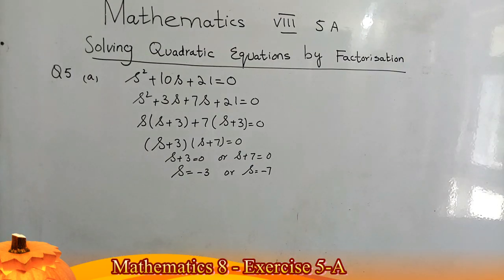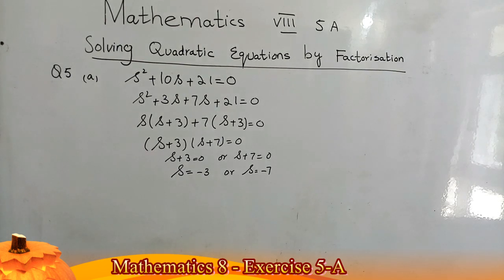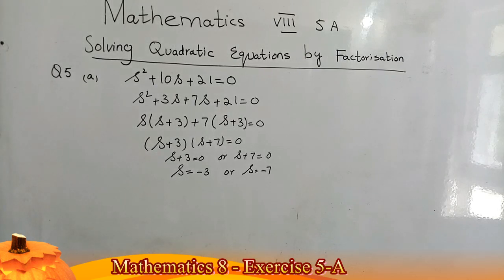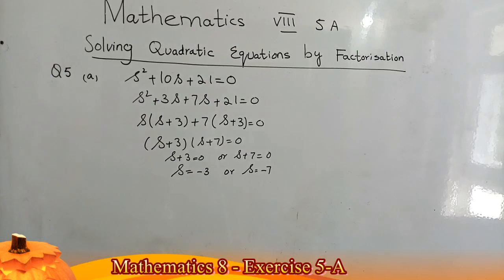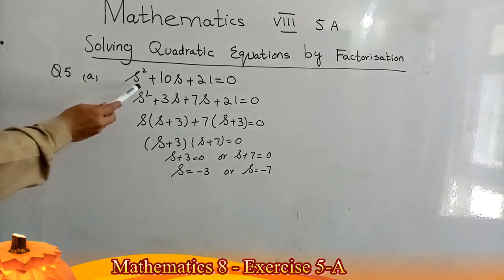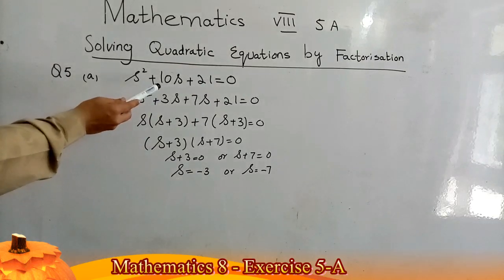Assalamu alaikum dear students. Today I will start question number five of the five-way exercise of D2 for class eight. Our topic is solving quadratic equations by factorization. Question number five, part A: s² + 10s + 21 = 0.